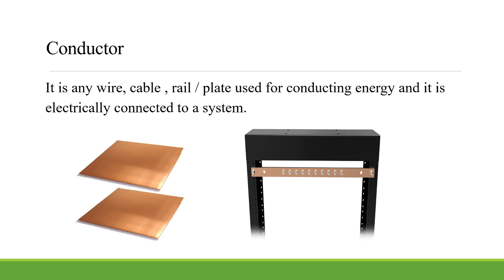Finally, it is conductor. A conductor is any wire, cable, tail or plate — for example, an earthing plate, a bar, or a copper bar — used for conducting energy and electrically connected to the system. So a conductor is simply a wire, cable or plate used for conducting energy and electrically connected to a system.